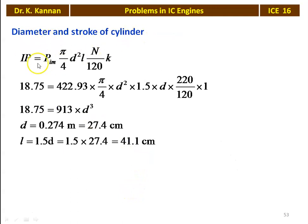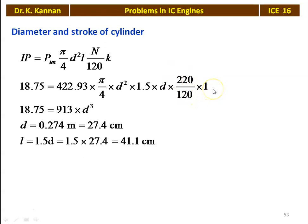Calculate bore and stroke: IP = IMEP × (π/4) × D² × L × (N/120) × K. Substituting: 18.75 = 422.93 × (π/4) × D² × 1.5D × (220/120) × 1. Solving: 18.75 = 913 × D³, giving D = 0.274 m (27.4 cm) and stroke = 1.5 × 27.4 = 41.1 cm.